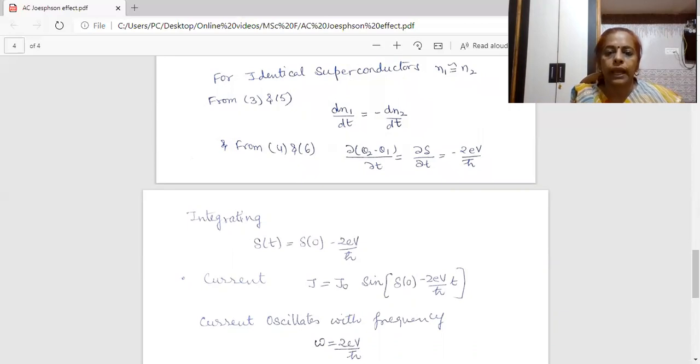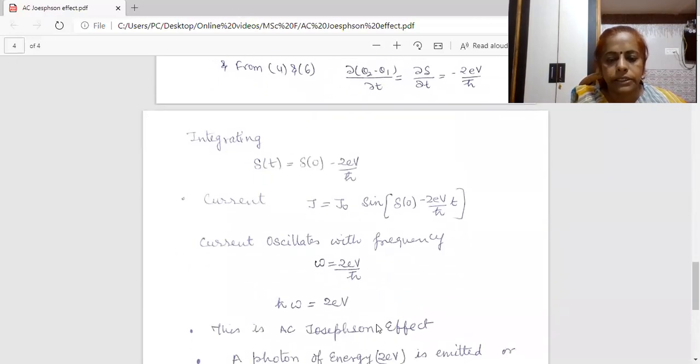This means that if we have two superconducting junctions, which are separated by an insulating layer, then in output, we have a current which will be alternating in nature. So, from here, we get ℏω equal to 2eV. That means a photon of energy equal to 2eV will be emitted or absorbed when an electron pair crosses from one junction to another.